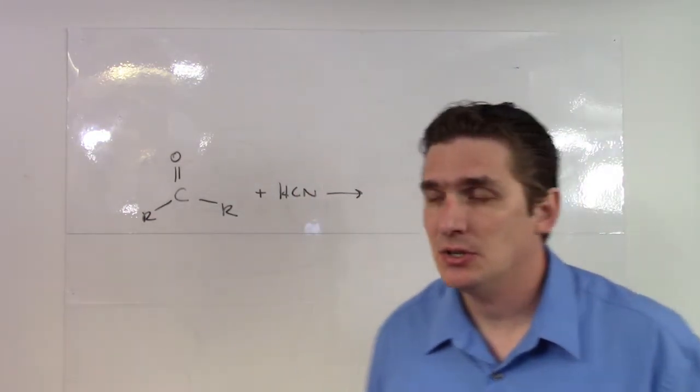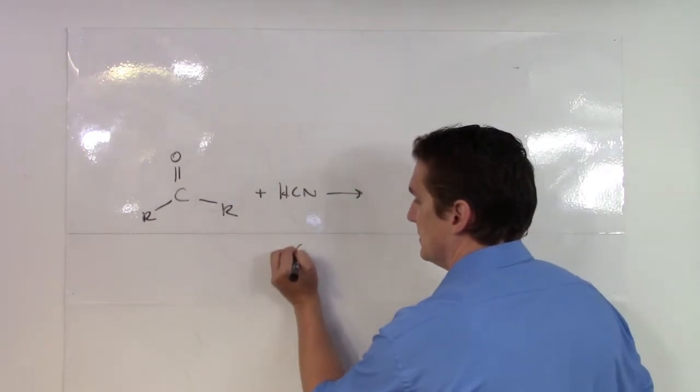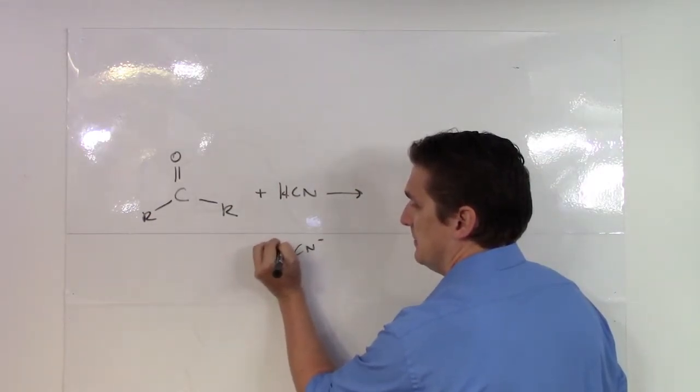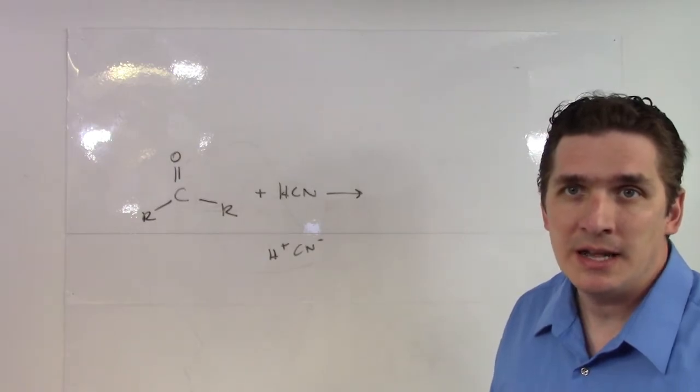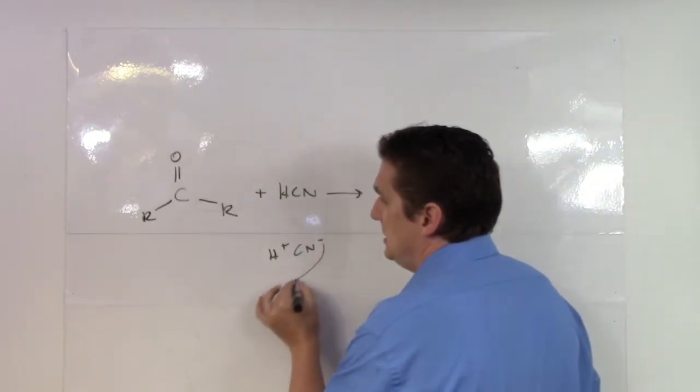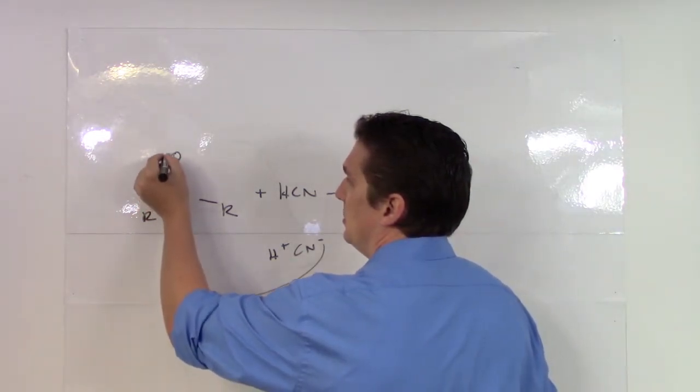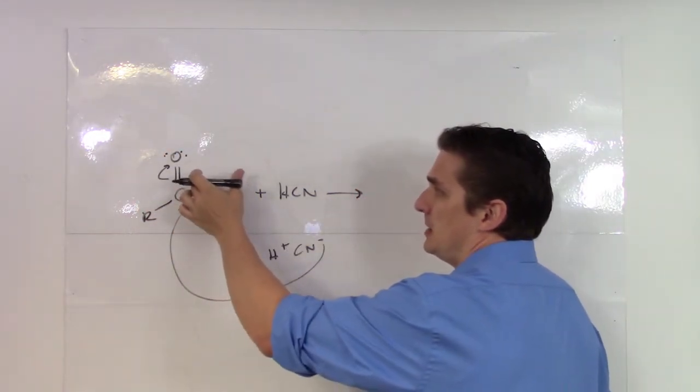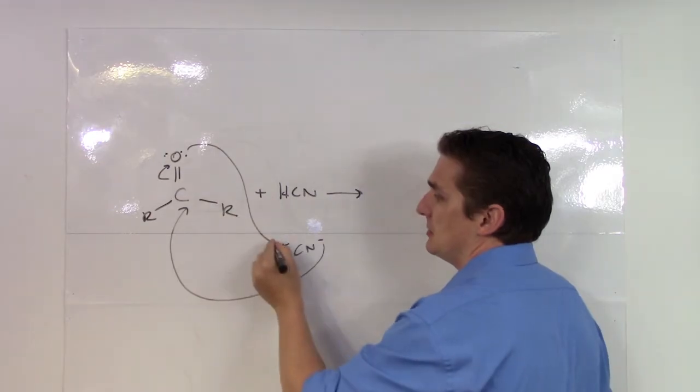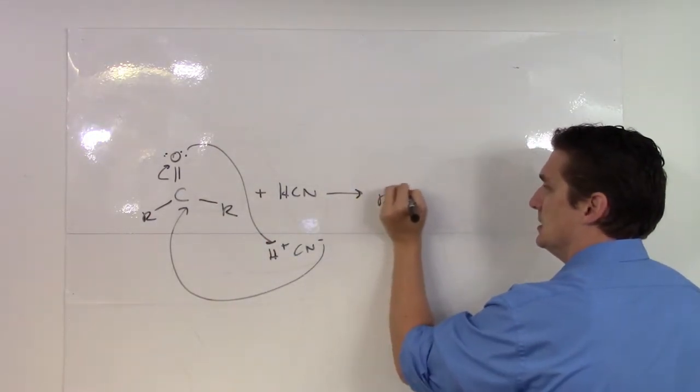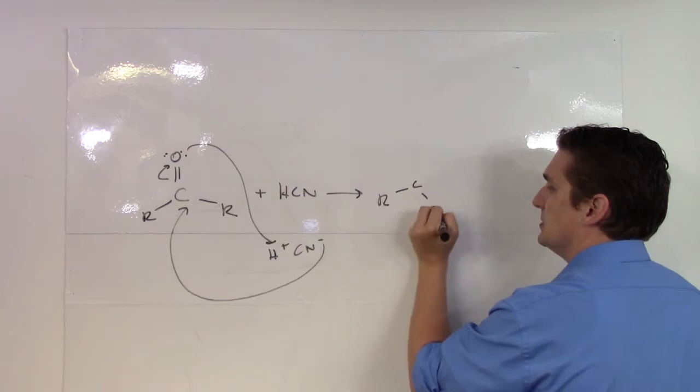So how does the reaction occur? Well, we've got a cyanide ion, C- and an H+. Much like water where we had a negative hydroxide, the cyanide here is going to attack the carbonyl carbon, promote our double bond to lone pairs, and subsequently have our lone pairs attack the H+ to give us the nitrile.